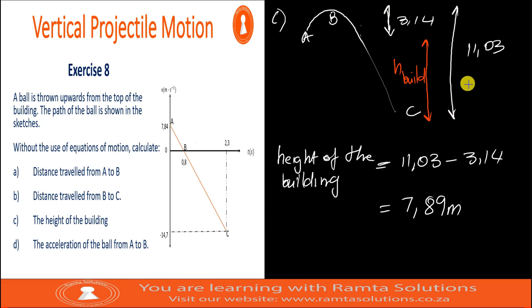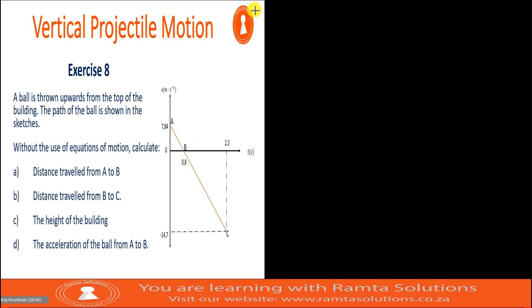Remember the demonstration here was simply to show you how to calculate this. It wasn't a formal submissions presentation. When you submit, you can just write the working directly. Number D: the acceleration of the ball from A to B. It must be 9.8 or something close to that — but it should be negative 9.8. Let's see.